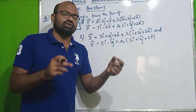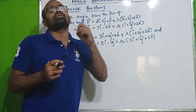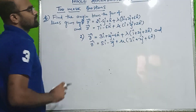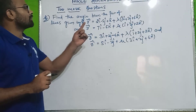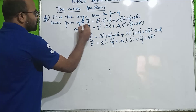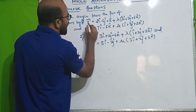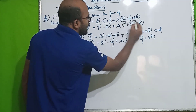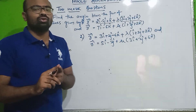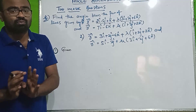Show that the two lines are perpendicular to each other. Find the distance of a point from the plane — this problem is very important. The angle between the pair of lines formula: R = a1 + λb1, a2 + μb2. For the first problem, cos θ = b1 · b2 divided by the magnitude of b1 into b2. This is the formula.